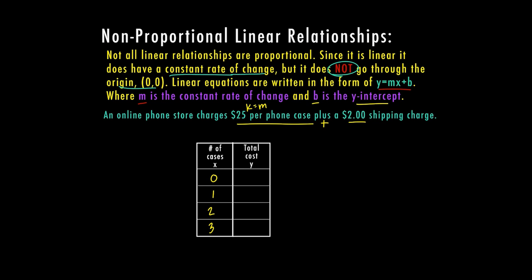Typically, you use K if there is not a B. This time we have a B, and then you use M when there is a B. So we have $25 per phone case. We recognize this as a cost for each item. So that's going to be our actual M or K. In this case, we have Y equals 25X.